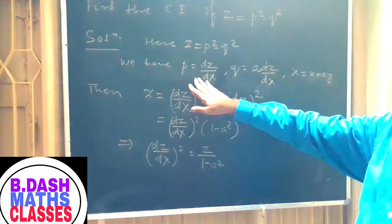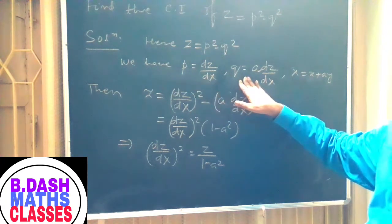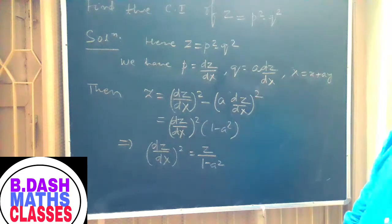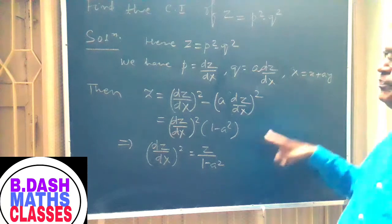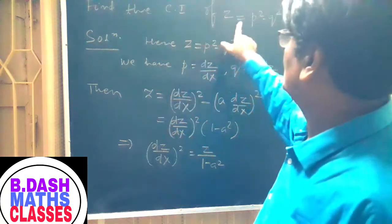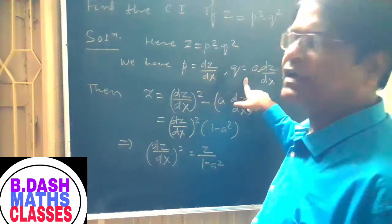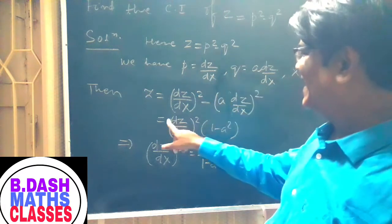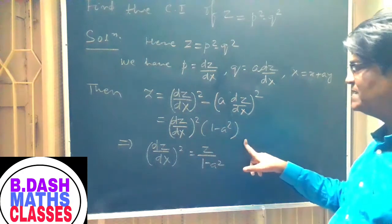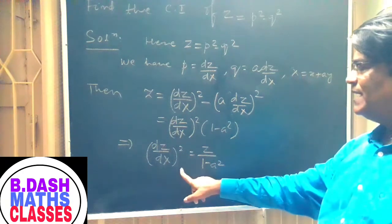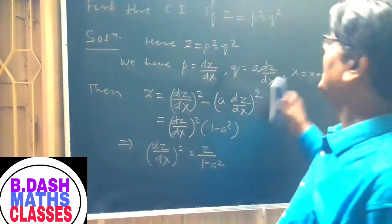We have substituted p = dz/dX and q = a·dz/dX, with X = x + ay, into z = p² − q². This gives z = (dz/dX)² − a²(dz/dX)². Taking (dz/dX)² as common factor, we get (dz/dX)²(1 − a²) = z, so (dz/dX)² = z/(1 − a²).